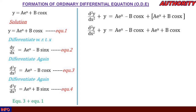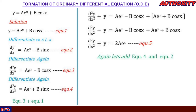Then ae^x + ae^x gives us 2ae^x. So we have d²y/dx² + y = 2ae^x. Let's call this equation 5.